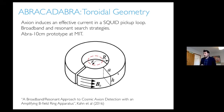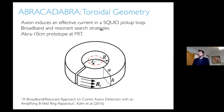Another idea to go to lower frequency is to use electronics — this is called ABRACADABRA, which has merged with another experiment called Dark Matter Radio. ABRACADABRA uses the fact that the axion in Maxwell's equations looks like an anomalous current density, and considers this current density flowing through a toroid, which induces a magnetic field inside the toroid. You can measure that by inducing a current in your SQUID — a superconducting quantum interference device.